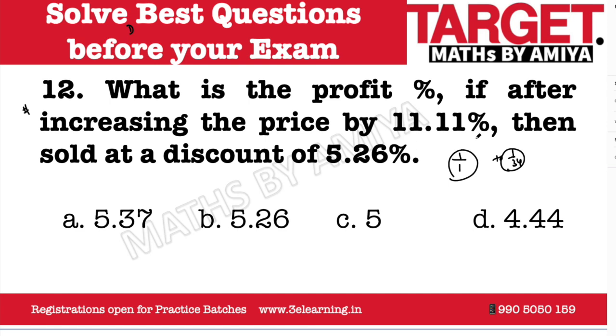11.11% is actually equal to 1/9. So if you are going to increase the price by 1/9, the multiplying factor becomes 10/9.